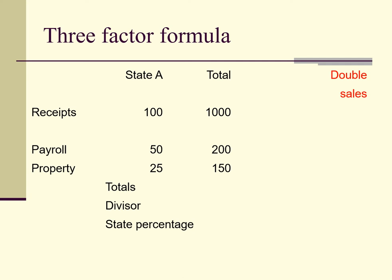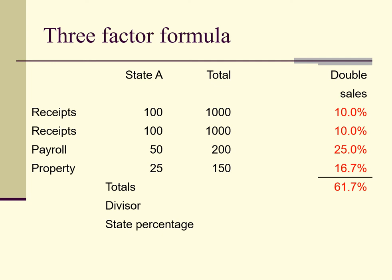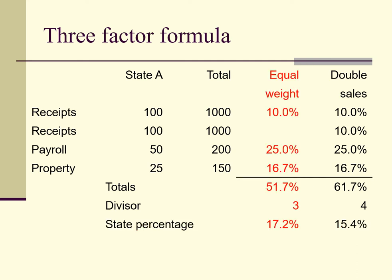Now we turn to a state that double-weights receipts. The first thing we do is add an extra line for receipts, then calculate the total percentages as before. Next we divide by four, since we have four lines of percentages, giving us a State A apportionment factor of 15.4%. Here are the two separate calculations side by side. States vary considerably as to whether they single-weight or double-weight receipts — some states even triple or quadruple weight the sales factor. You need to go to the individual state tax returns to find out what formula they use.